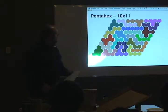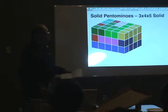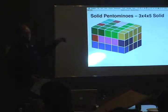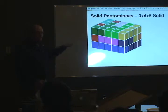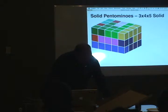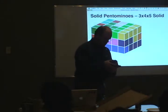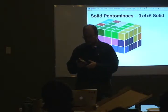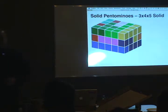There are also polyhexes, made of hexagons like a honeycomb. This is a pentahex — five hexagons — and these are all 22 possible shapes. In this case it makes a 10 by 11 hexagon lozenge shape. You can also get into three dimensions, like solid pentominoes. Solid pentominoes are the regular flat pentomino but one unit thick, and they make a 3 by 4 by 5 solid. I think there are over 3,000 different solutions for this, but I have yet to find one on my own. I'll pass that set around — you can see they're one unit thick.